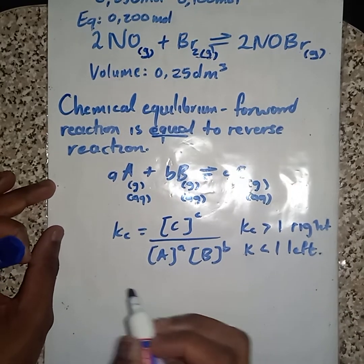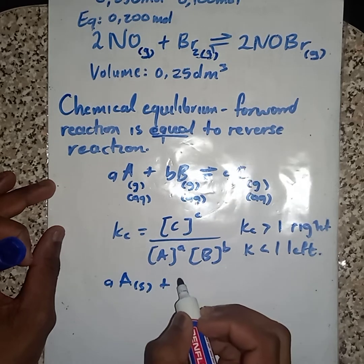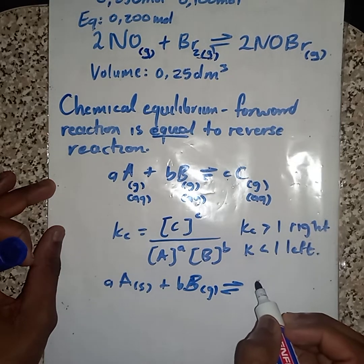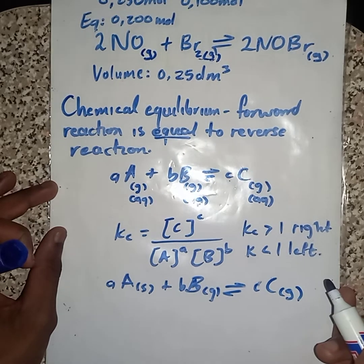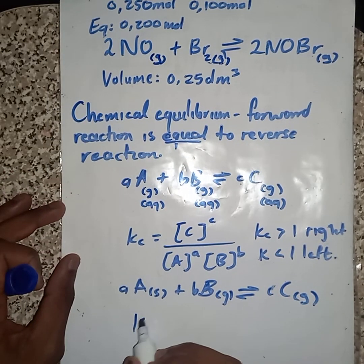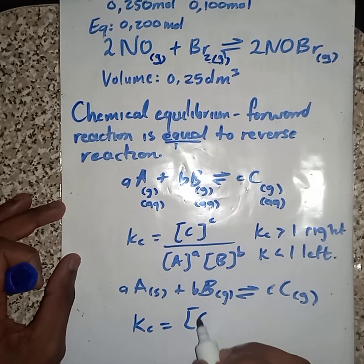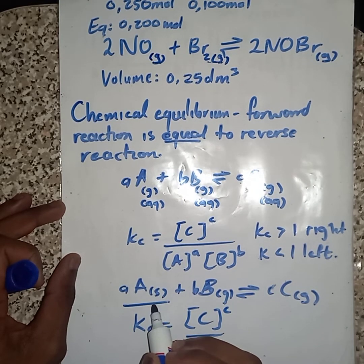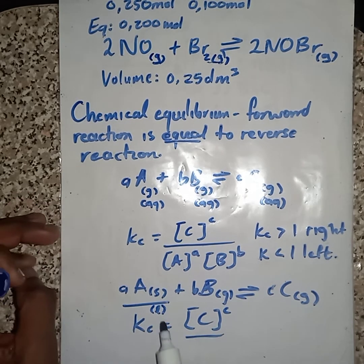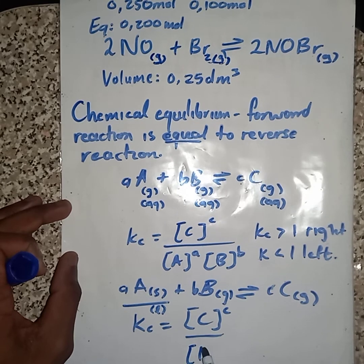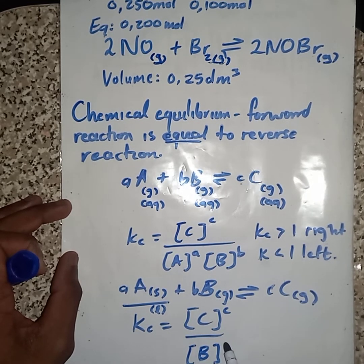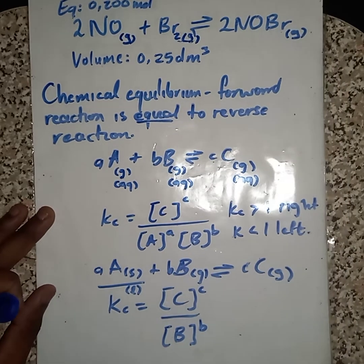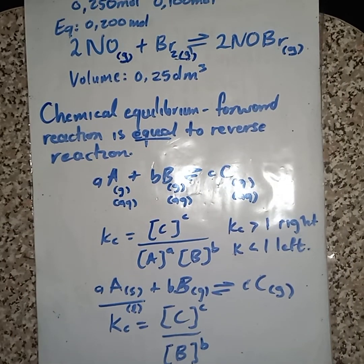If we had something like this — say solid B reacting with C gas — then the KC value would only include C, because we don't write solid phase or liquid phase in KC. We only write gas phase or aqueous phase species. This was just a revision.